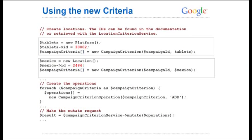Let's look at a code example of how to actually create one of these new campaign criteria. In this case using PHP, we're going to create a tablet target and a geo target for the country of Mexico. We create a new platform target object and set its ID — you can pull that from your database, from our constant data service, or hard code it. Then we create a new campaign criterion object using this ID. We do the same for the country target — a new location object enclosed in a campaign criterion object — and send it to the campaign criterion service with the mutate method.